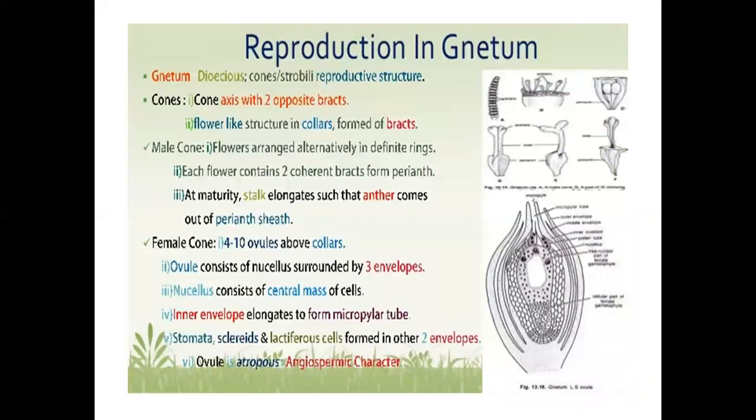Reproduction in Natum: Natum is dioecious. Cones and strobili are reproductive structures. Cone axis has two opposite bracts; flower-like structures are formed by bracts. Male cone: flowers are arranged alternately in indefinite rings. Each flower contains two coherent bracts forming a perianth. At maturity, the stalk elongates such that the anther comes out of the perianth sheath. Female cone: four to ten ovules are present above the collar. Ovules consist of nucellus surrounded by three envelopes. Nucellus consists of a central mass of cells. The inner envelope elongates to form the micropylar tube. Stomata, scleroids, and laticiferous cells form in the other two envelopes.